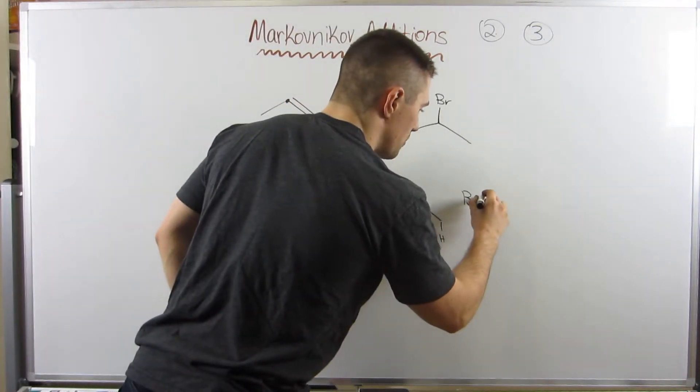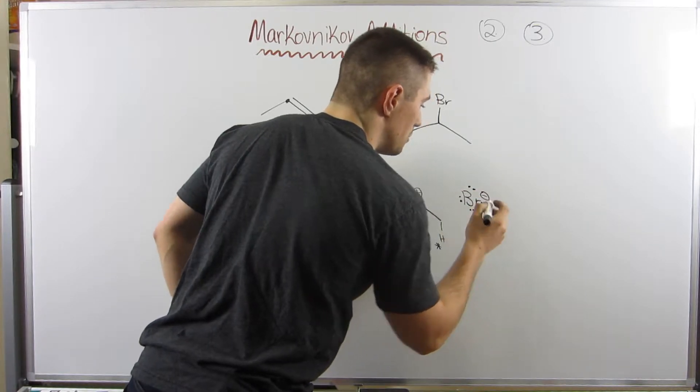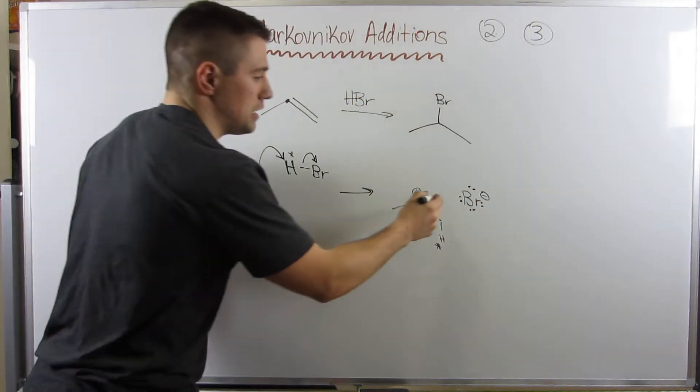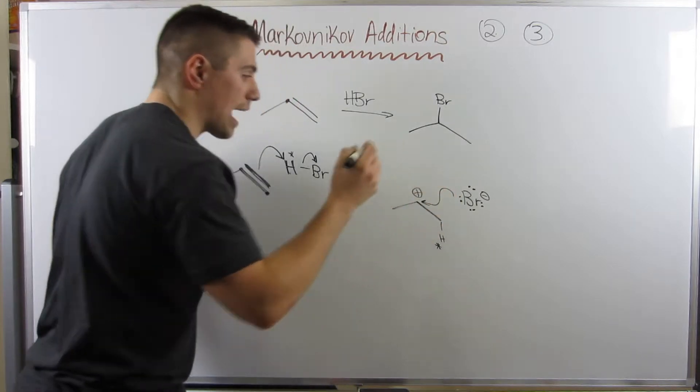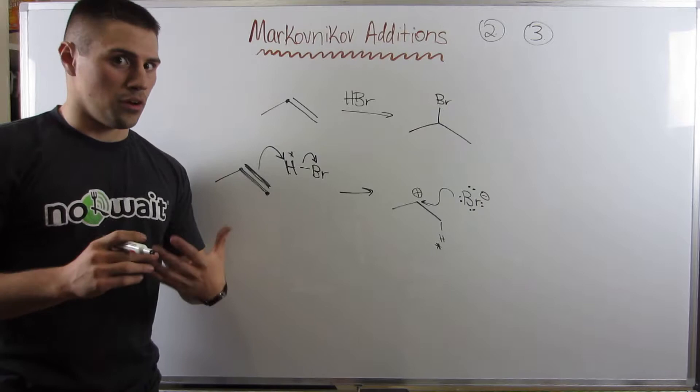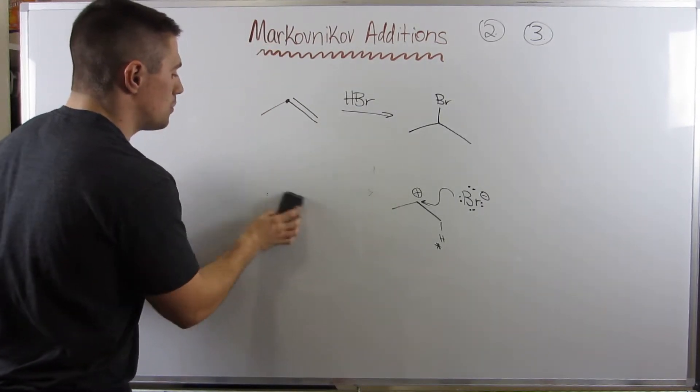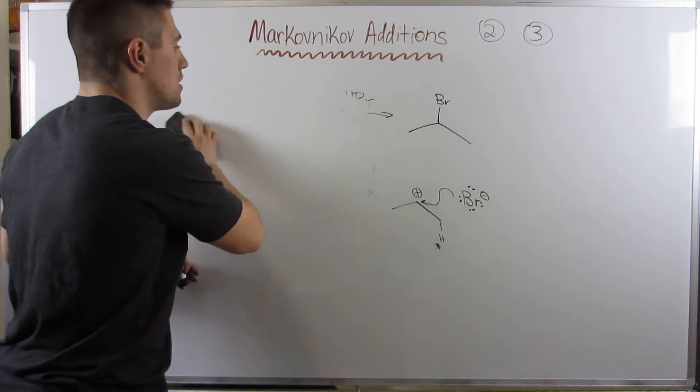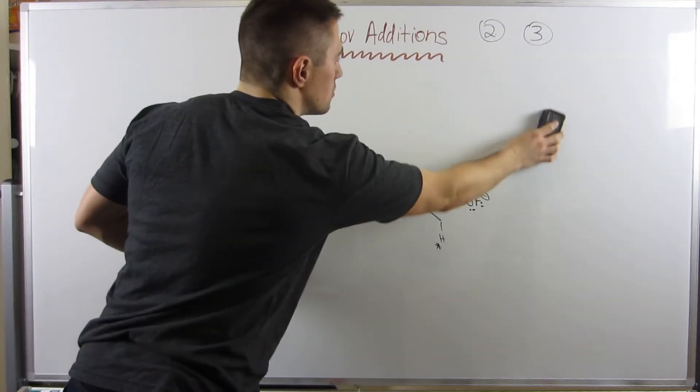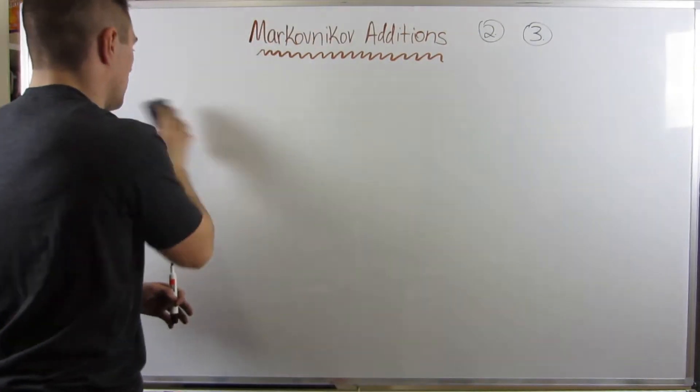Then all you do from there is have your conjugate base, Br-, good nucleophile. He's going to come back and attack right there. And the mechanism is done. Not bad. Let's do another example, and then we will move on. Well, actually, we'll do two examples, and then we will move on to the other reaction, which is very similar to this one.